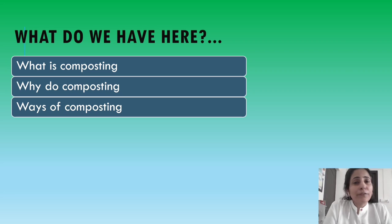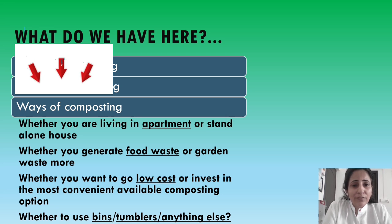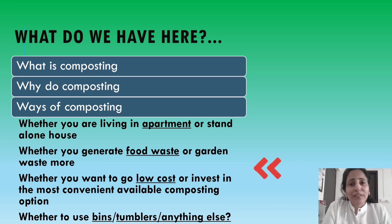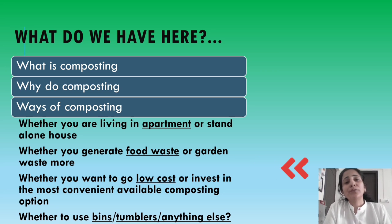There are different ways of composting and it depends on a variety of factors which way you choose for yourself — for example, whether you live in an apartment or a standalone house, whether you generate food waste or garden waste more, whether you want to go for a low cost option or something which is totally convenient, or whether you want to use bins or tumblers.